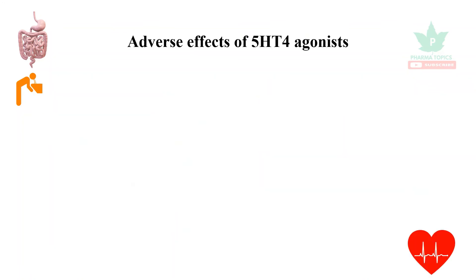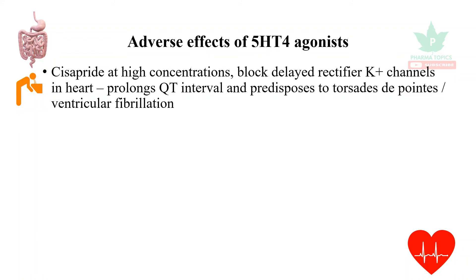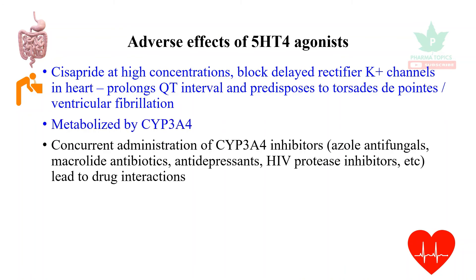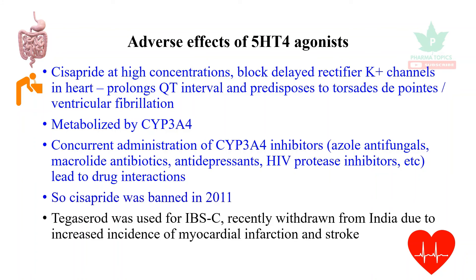Regarding adverse effects of 5-HT4 agonists: cisapride at higher concentrations blocks the delayed rectifier potassium channels in the heart, prolonging the QT interval and predisposing to torsades de pointes or ventricular fibrillation. It is metabolized by CYP3A4. Concurrent administration of CYP3A4 inhibitors such as azole antifungals, macrolide antibiotics, antidepressants, or HIV protease inhibitors leads to dangerous drug interactions. Cisapride was banned in 2011.